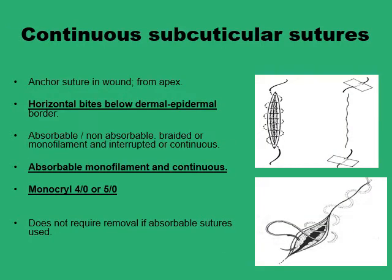The subcuticular stitch has been employed in a variety of situations using a variety of materials, including absorbable or non-absorbable sutures, sometimes even in an interrupted rather than a continuous pattern. The usual now is to use an absorbable monofilament suture line for the ease of its passage through the tissues, run continuously. The typical choice is monocryl 4-0 or 5-0 on a 3/8 reverse cutting needle.